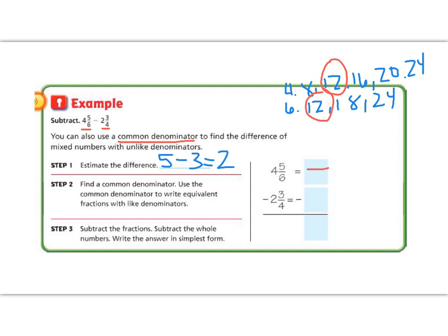How do we change a 6 into a 12? Well, we have to multiply by 2. If we multiply by 2 on the bottom, we have to multiply by 2 on the top. So 5 times 2 is 10. And don't forget that that 4 from our whole number needs to jump in front of it. So we have 4 and 10/12.